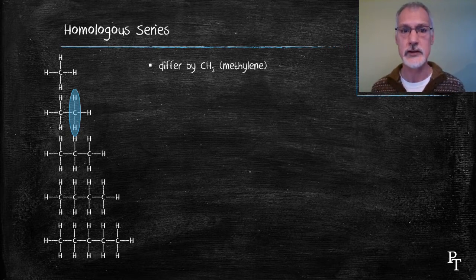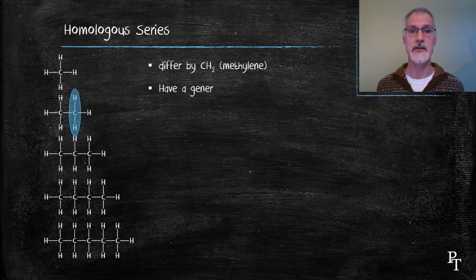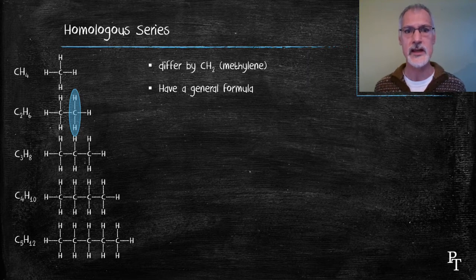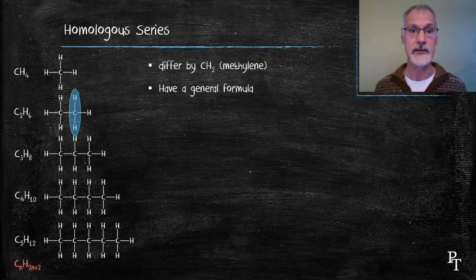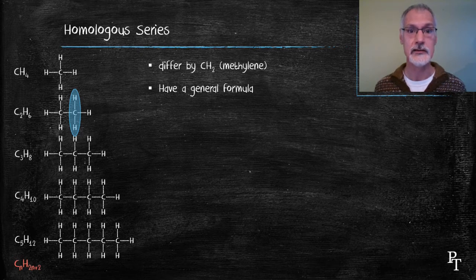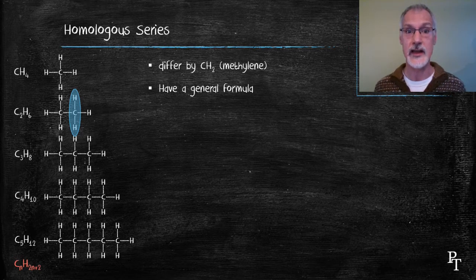They also have a common general formula. I'll start by writing down their individual molecular formulas. A general formula means if I have N number of carbons, you should be able to predict how many hydrogens it has. So, in this case, if I use the general formula CN, you'll notice the number of hydrogens is twice that, plus 2. And hence, my general formula.